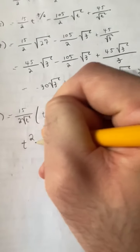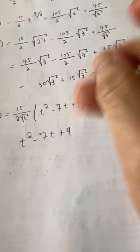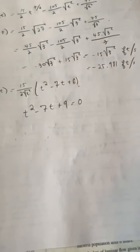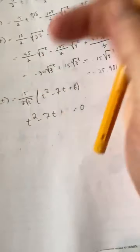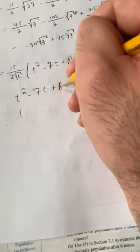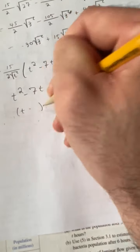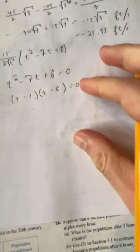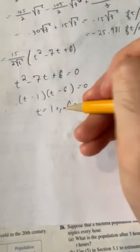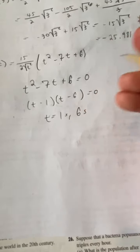So we let t squared minus 7t plus 6 equals 0. This is easy to factor: negative middle term and positive final term means two negatives. Factoring gives negative 1 and negative 6, so t equals 1 second and t equals 6 seconds. At both 1 second and 6 seconds, our velocity equals zero.